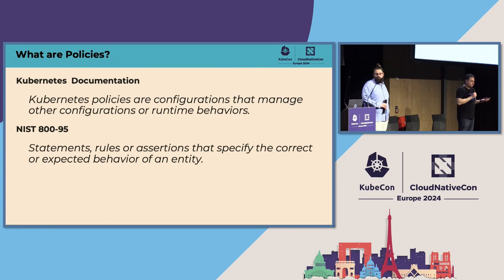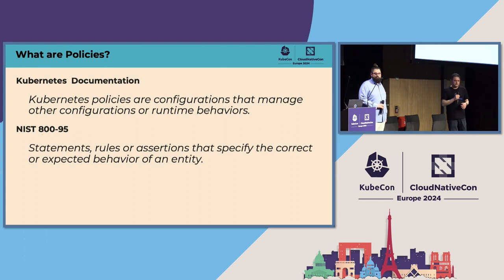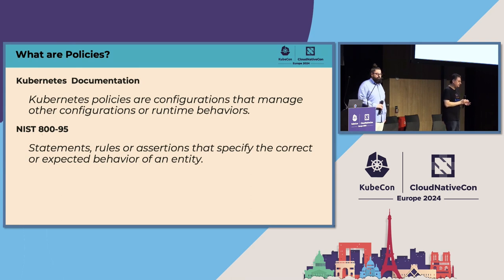Starting with what is a policy — one of the things we contributed from the working group is a chapter on policies in the Kubernetes docs. Quite simply, what we think of as policies are configurations that manage other configurations or behaviors. A policy is nothing more than another config object or resource — it could be a custom resource or a built-in resource providing control over behaviors in your cluster. There's also a formal NIST definition, very similar, about managing expected behaviors. And it's not just about restricting or validating checks — you can also generate and mutate; it's full configuration lifecycle management.